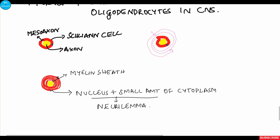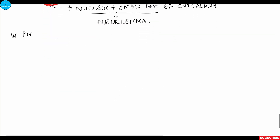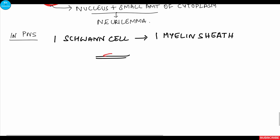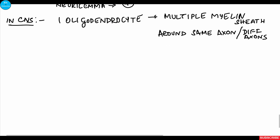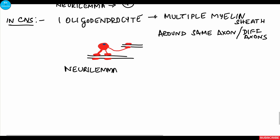In the peripheral part, the nucleus of the Schwann cell is present with a small amount of cytoplasm; this outer layer is called the neurilemma, which helps in the repair of damaged nerve fibers. In the PNS, one Schwann cell forms only one myelin sheath around one segment of an axon. In the CNS, the oligodendrocyte forms multiple myelin sheaths around a single axon or around different axons by giving numerous branches. Neurilemma is absent in the CNS, which means that if nerve fibers within the CNS are damaged, repair does not take place.